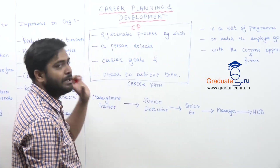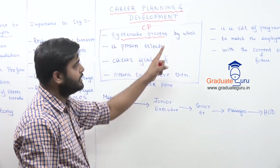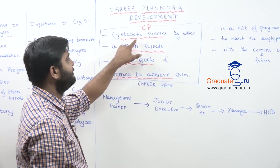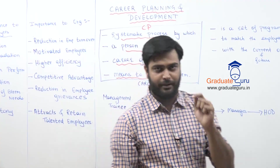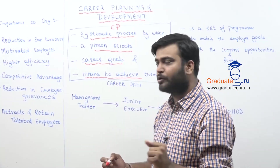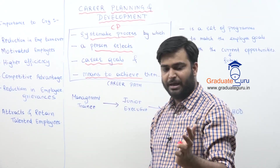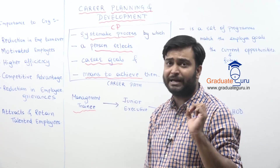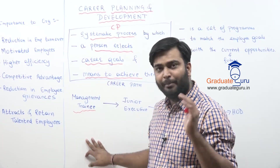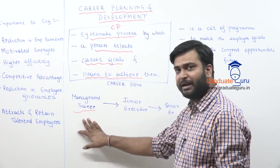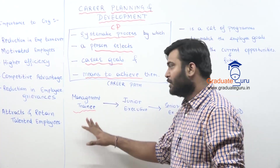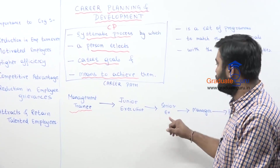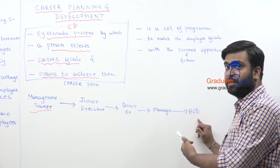Career planning is a systematic process by which a person selects career goals and the means to achieve them. For example, I did my MBA in marketing, got a campus placement, and joined a company as a management trainee. I won't always stick to that post. From management trainee I will go to junior executive, then senior executive, then manager, then head of department, and so on.